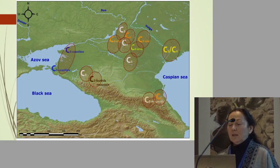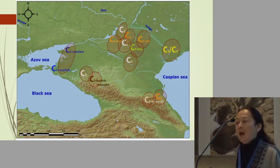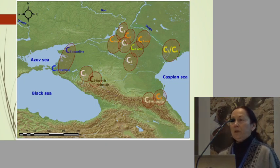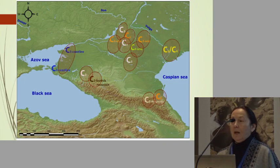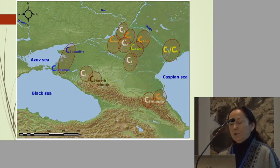We also have C4 plants and C3 plants with high values of nitrogen, so we have a very good isotope background. Through the pilot research we were able to distinguish different pastures, and we are able to identify specific isotope values for the coastline pastures, for the arid pastures, and for the foothills mountain pastures.